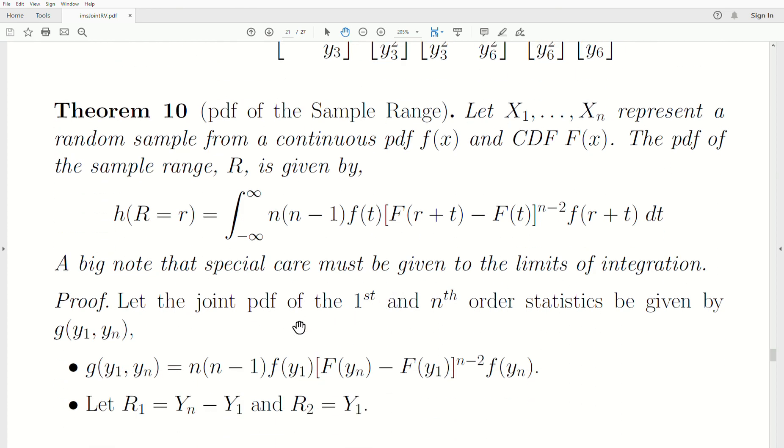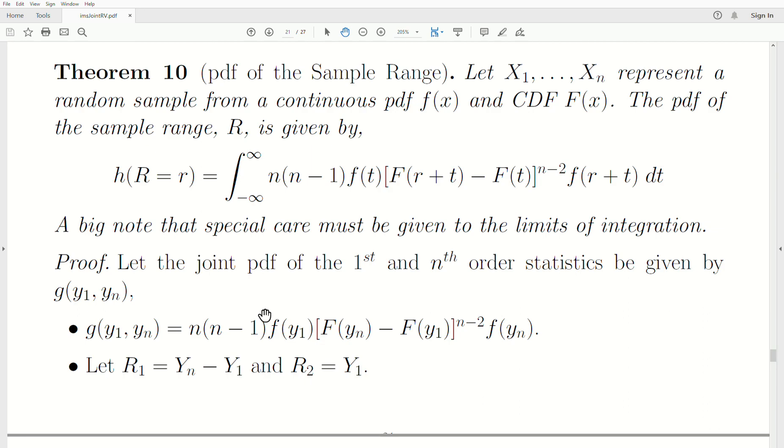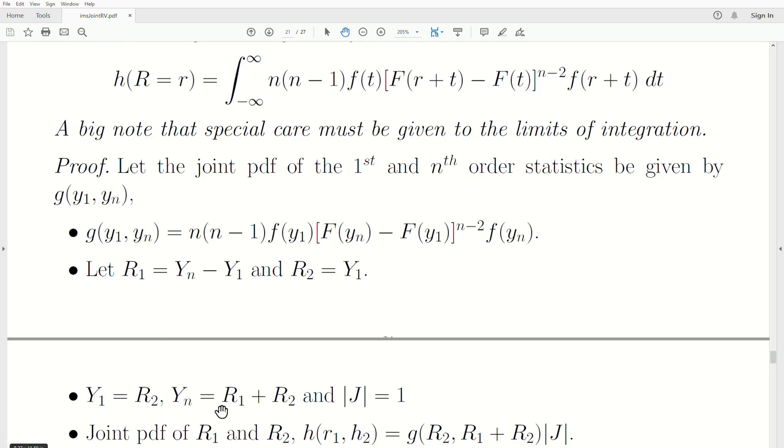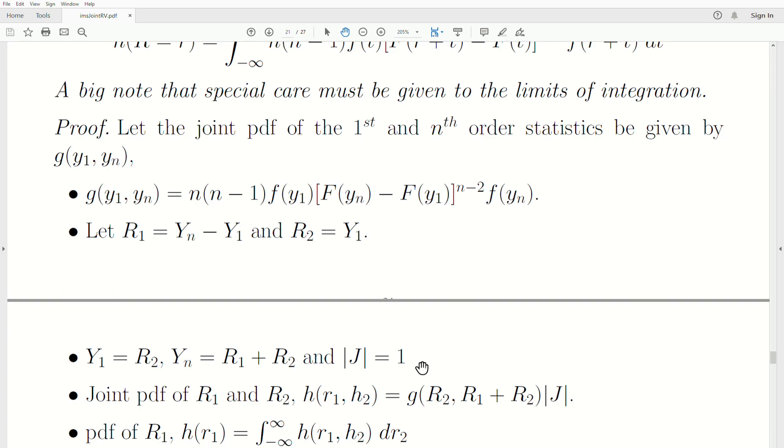Let the joint PDF of the first and nth order statistics be given by g(y1, y2). Look at part one for more details. Now we want to find the PDF of the sample range r1, but since this PDF has two variables, we have to transform it to two, and then we'll integrate out the one that is not of interest. So r1 is of interest, that's the sample range, and then we let r2 be y1. When we back solve for y1 and y2, we get this, and the Jacobian of the transformation is 1.